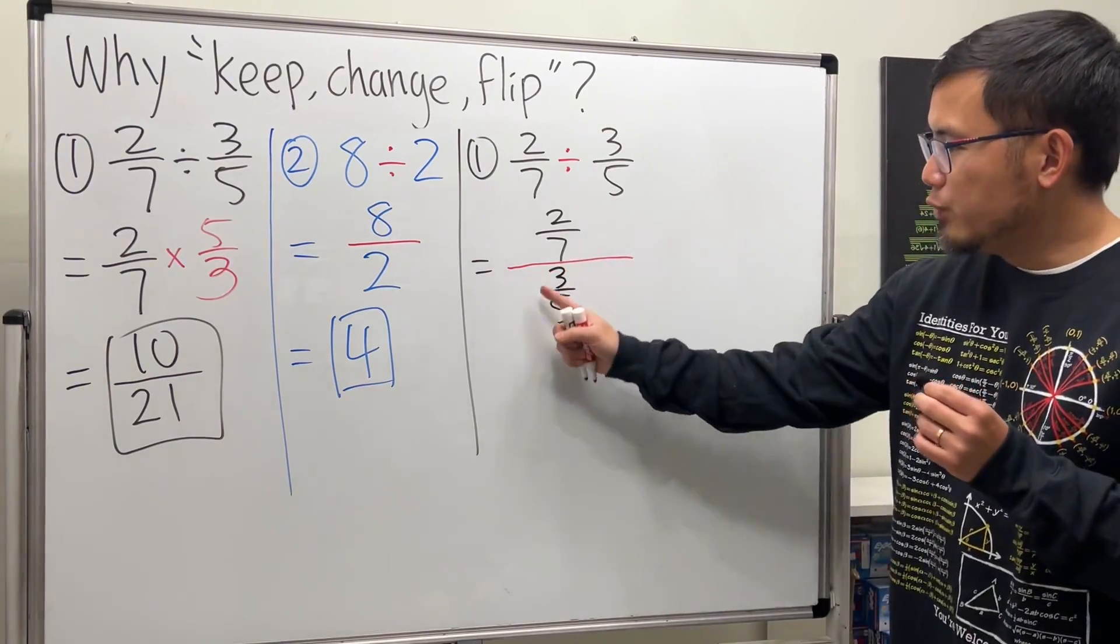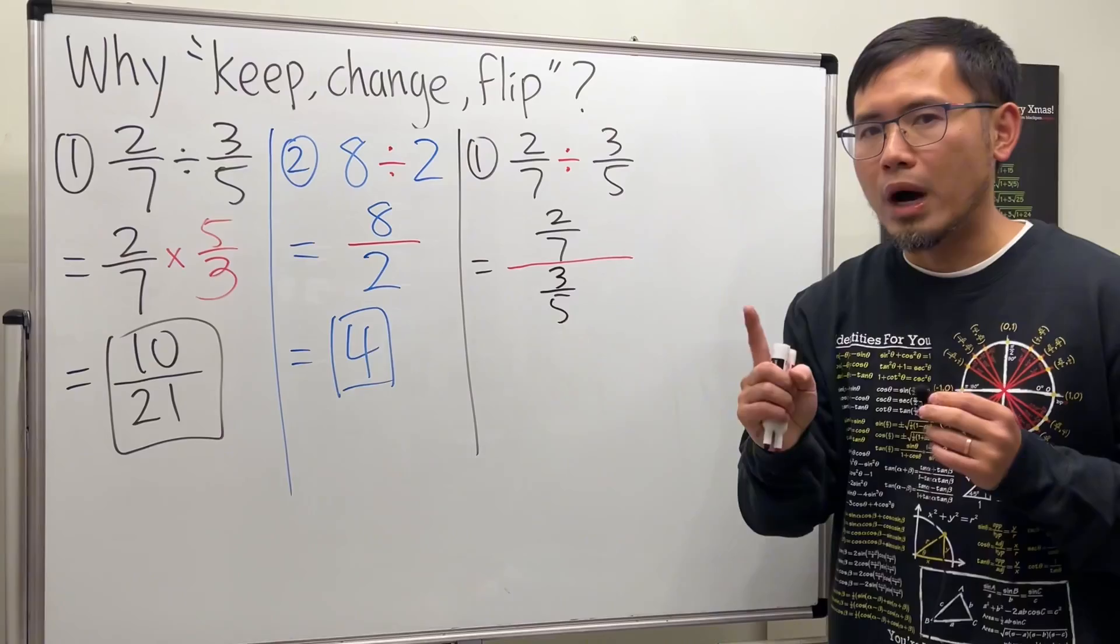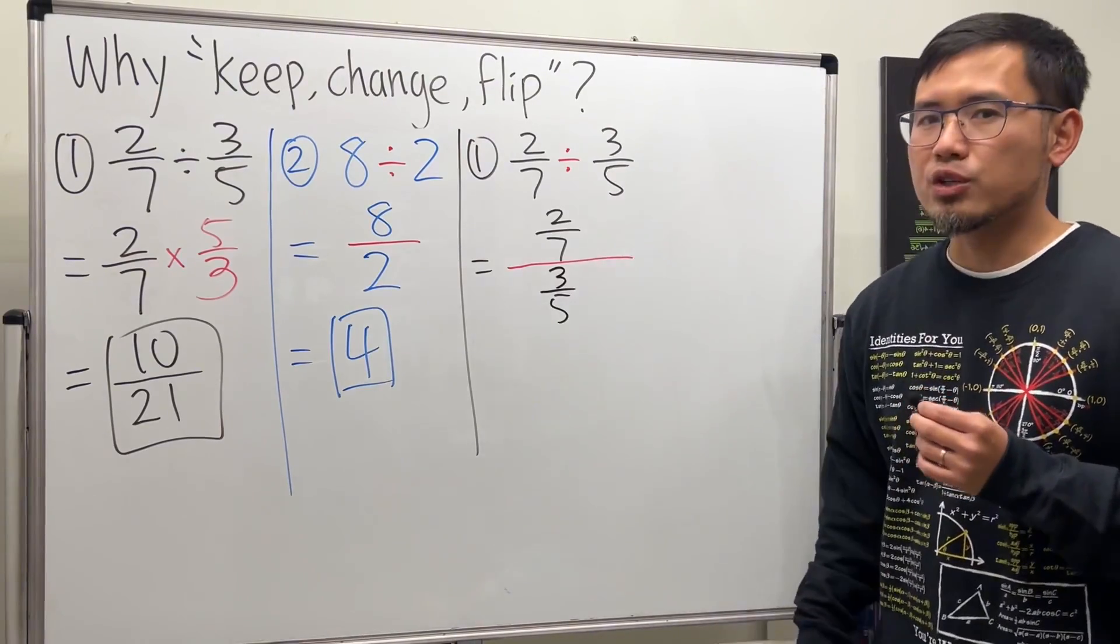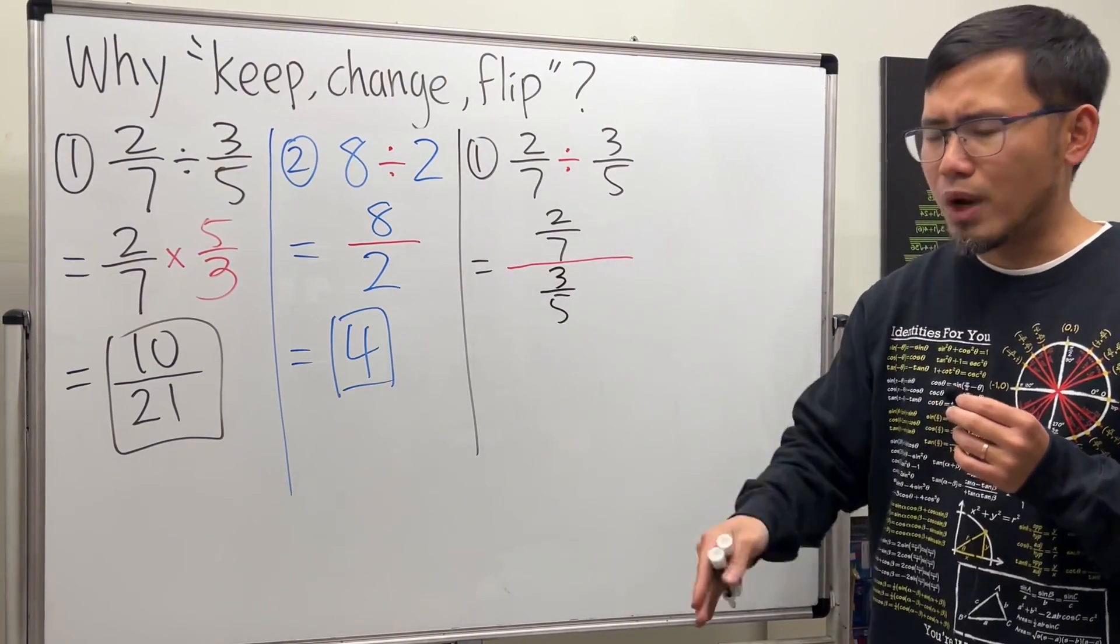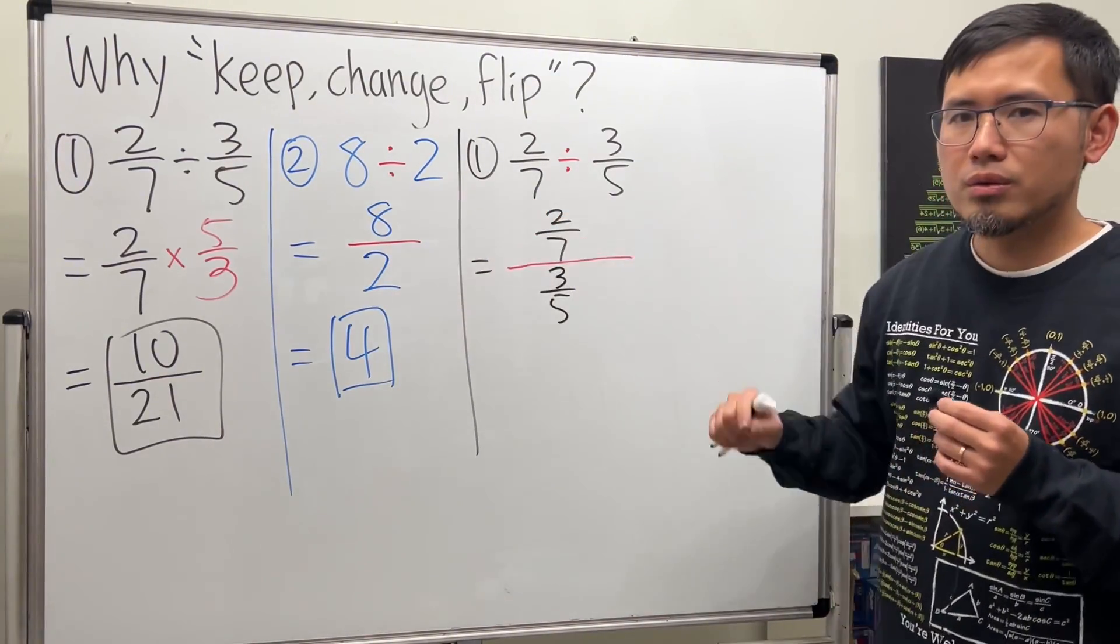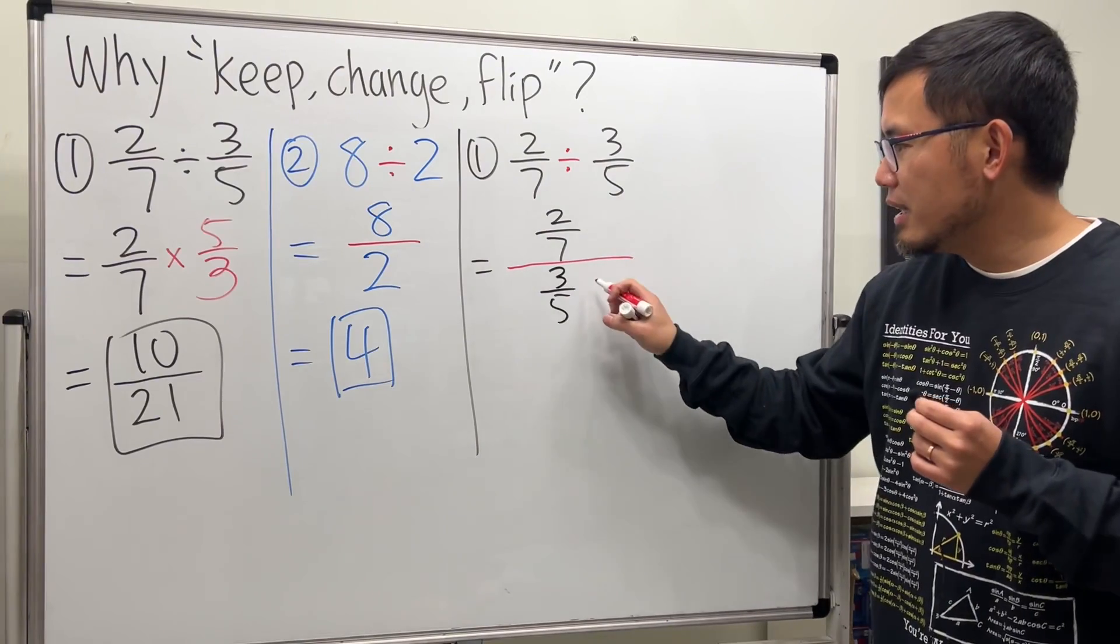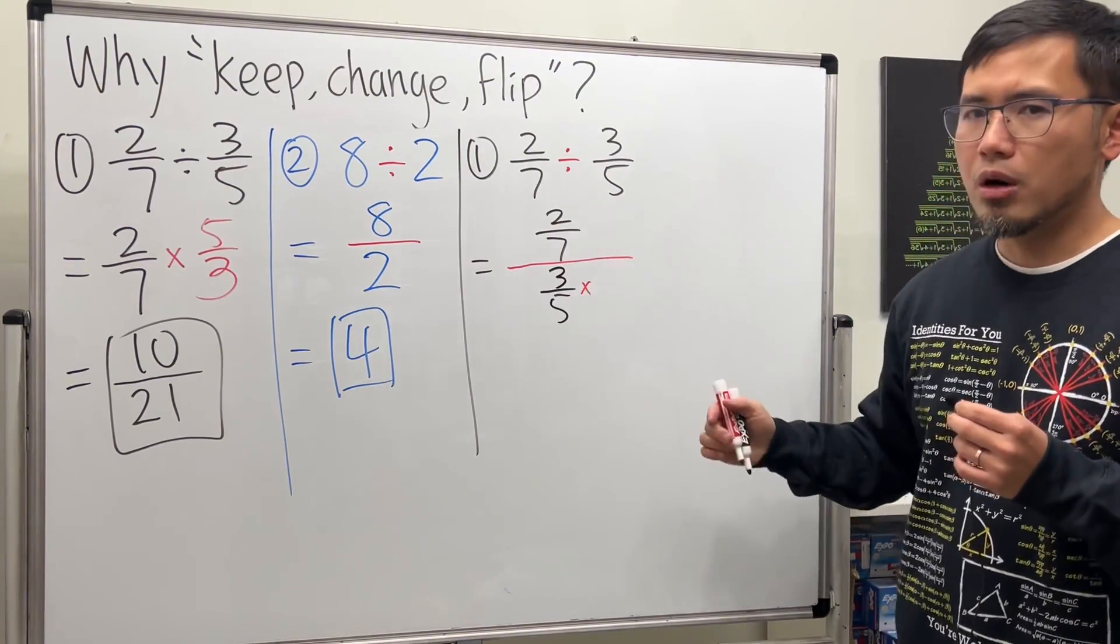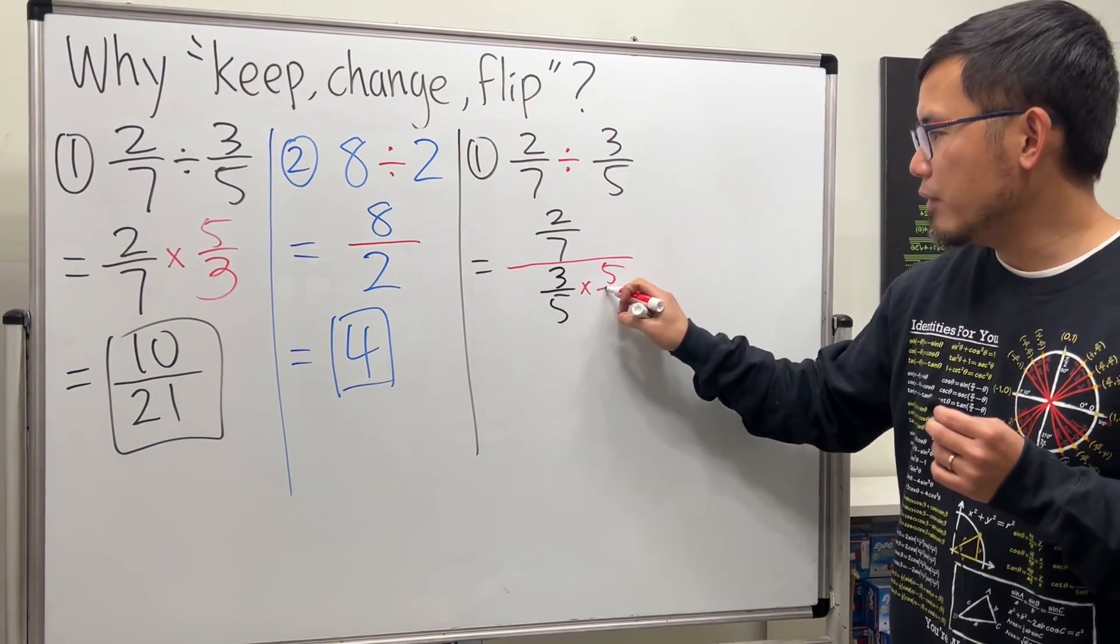How? If we can somehow make the bottom to be 1, then we don't have complex fraction anymore. Because over 1 doesn't matter. So, here we have 3 over 5. How can we make that into a 1, though? Well, the answer is, let's multiply by its reciprocal, namely 5 over 3.